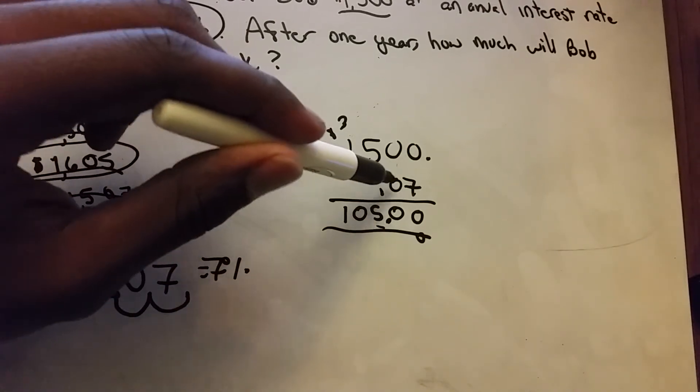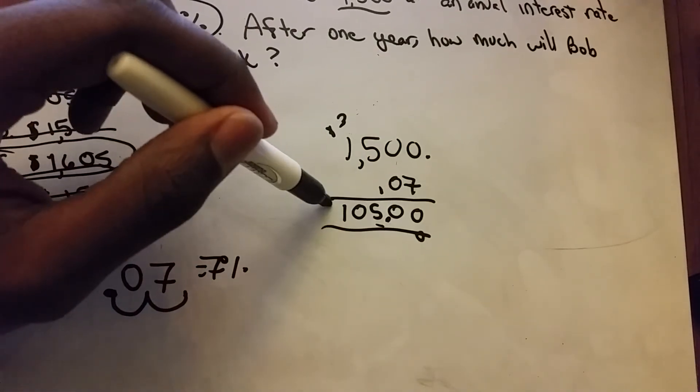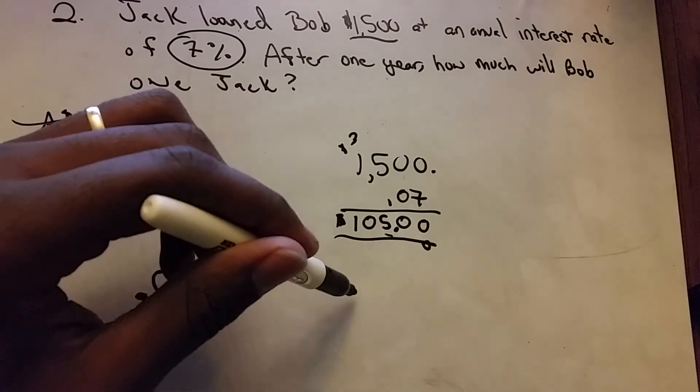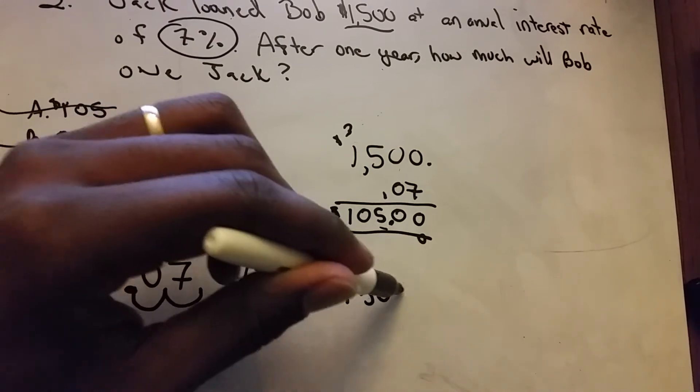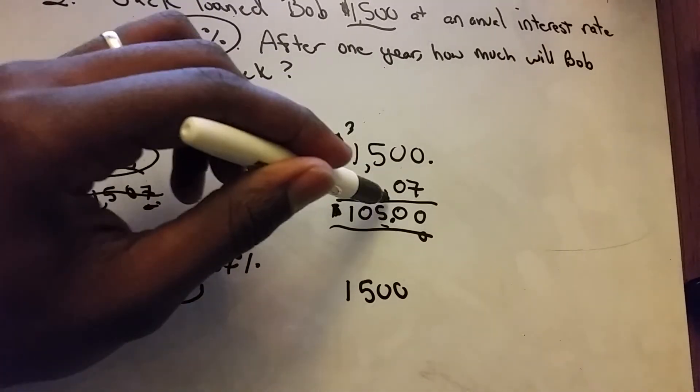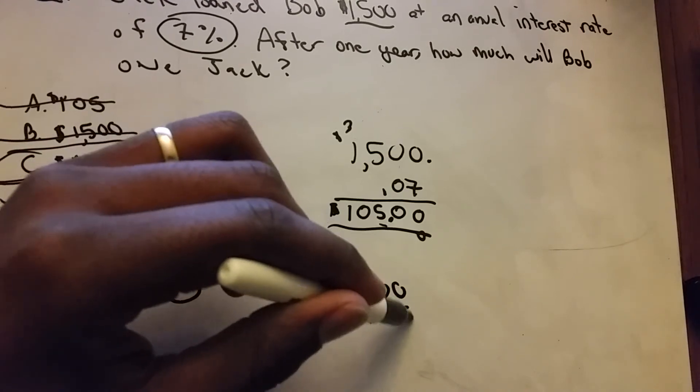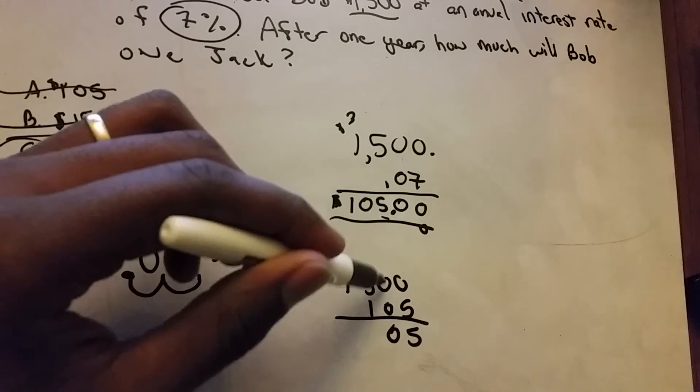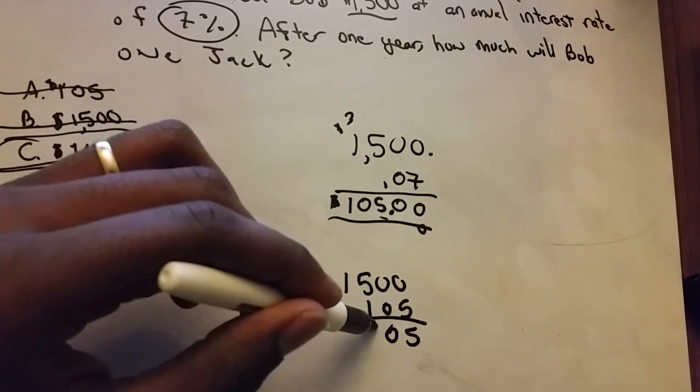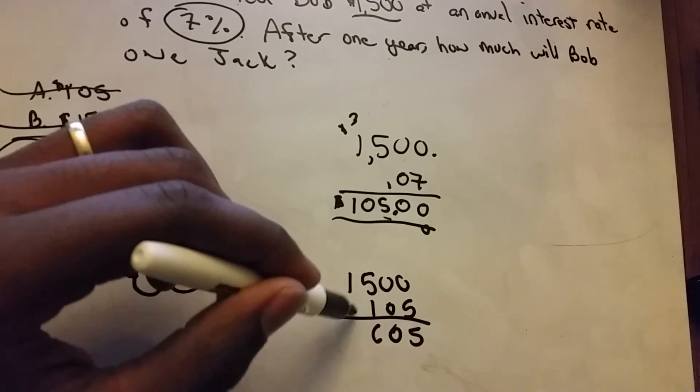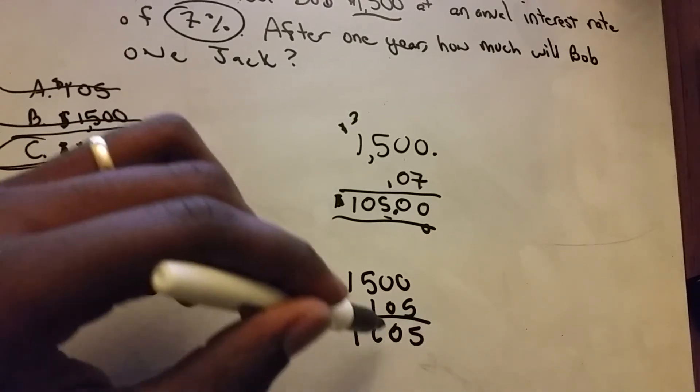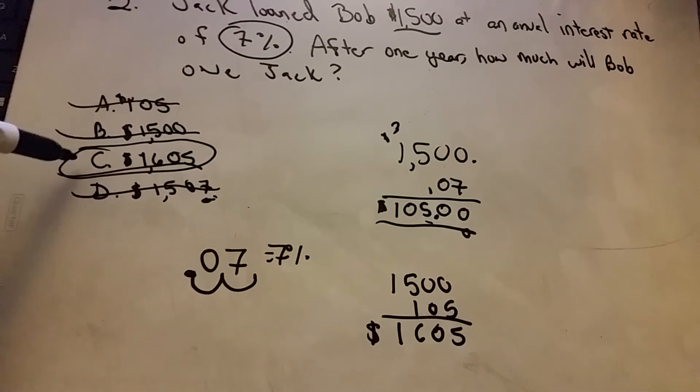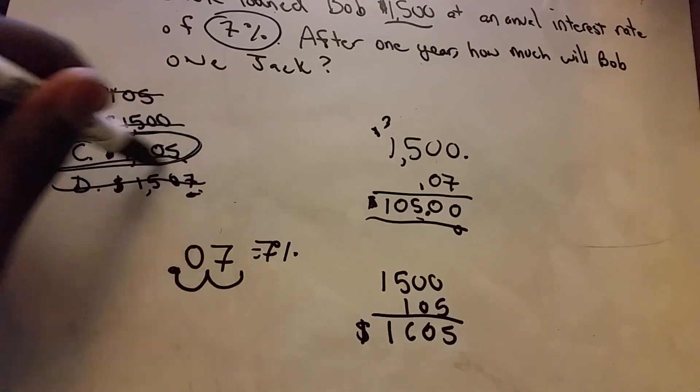We have one, two, so there. Our answer: 7% of $1,500 is $105. So we take the original loan, which is $1,500, and we add on the 7% interest, which is $105. And we get 5 plus 0 is 5, 0 plus 5 is 5, 0 plus 1 is 1, 5 plus 1 is 6, and there's nothing here so we'll bring down the 1.